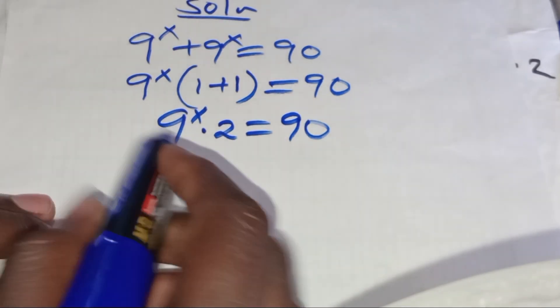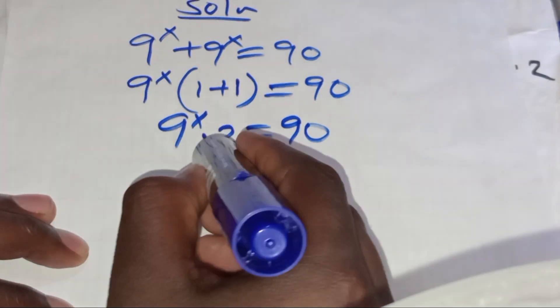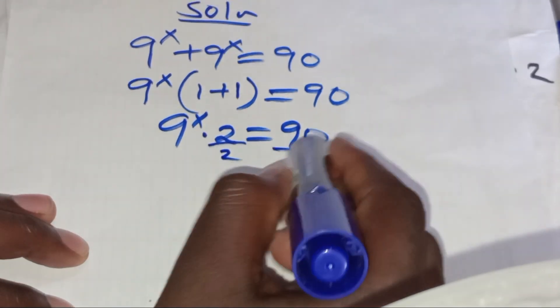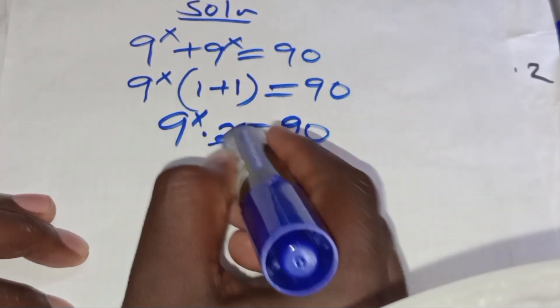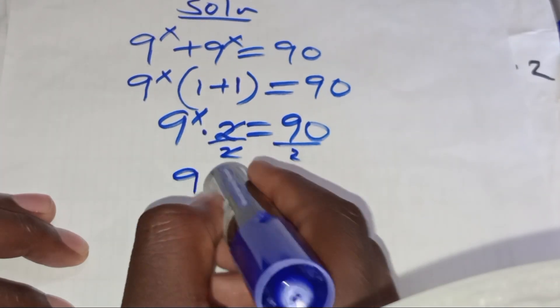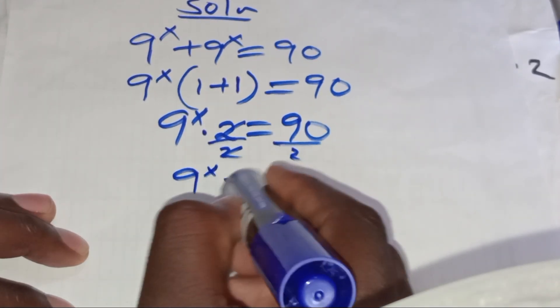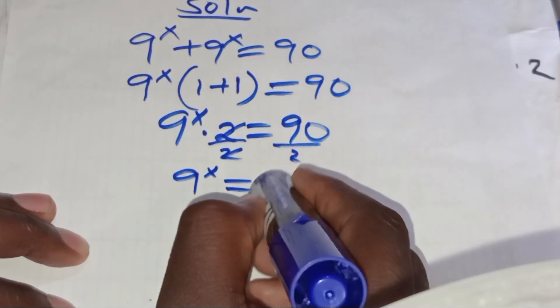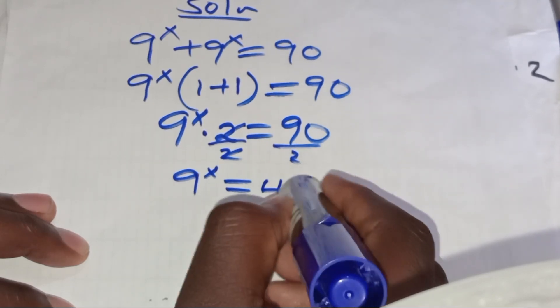We divide both sides by 2, so that we'll have 9 to the power x equals 45.